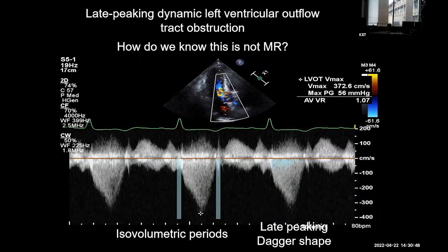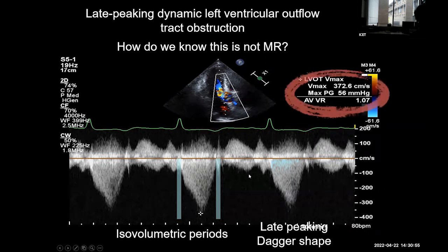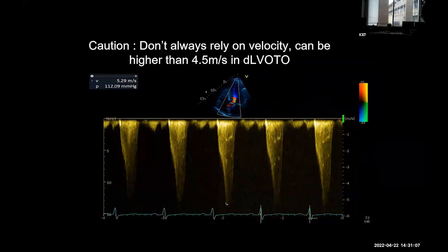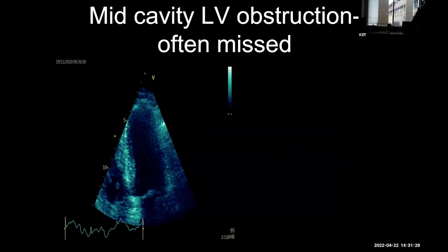In this patient with the hyperdynamic LV, we have: isovolumetric periods not included, the late-peaking dagger shape, and a max velocity that — if it were MR in a hyperdynamic ventricle — should be well into the sixes. Don't rest on one feature alone; look at the whole clinical picture. Also remember that dynamic LVOTO and mid-cavity LVO are different entities with different etiologies, different clinical manifestations, and different Doppler flow profiles.